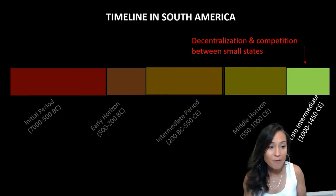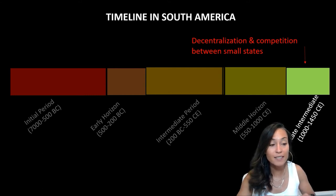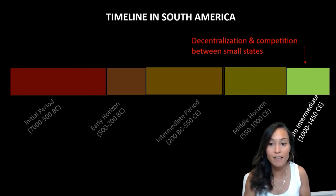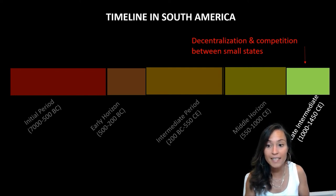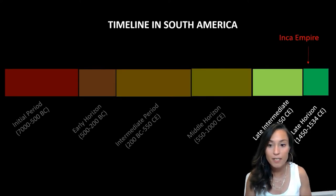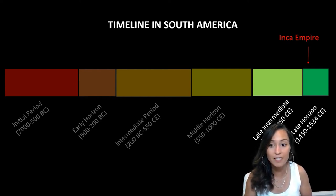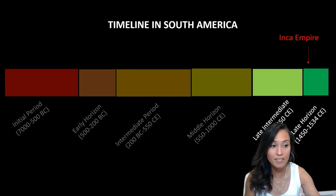Around 1000 CE, we see that the centralized authority at Tiwanaku begins to fray, and a political vacuum of small competing states emerges. This period of decentralization and conflict is known as the Late Intermediate Period. Following this period of conflict and war, this political vacuum was filled by the Incan state. The Incan Empire itself flourished in the lowland and highland regions of the Andes for roughly 100 years, beginning in the mid-15th century.